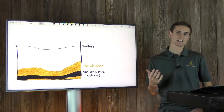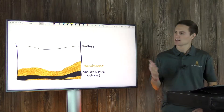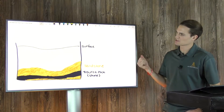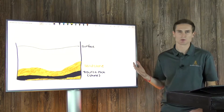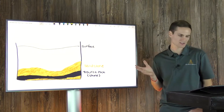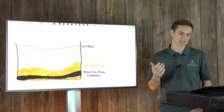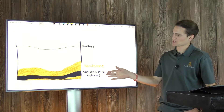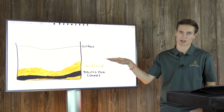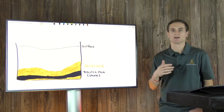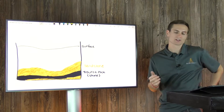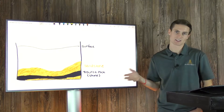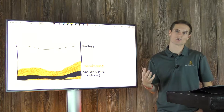Let's first set the scene. We've got the basics of a stratigraphic column here — just an example. All of this is essentially blown out of proportion. I'm calling this the surface, and then we have sandstone, source rock, and overburden on top of it. This isn't drawn to size; it's just for our learning.